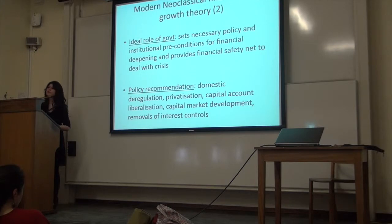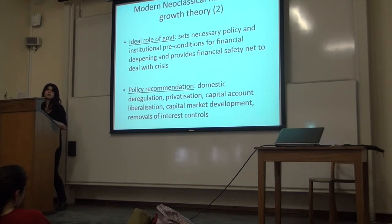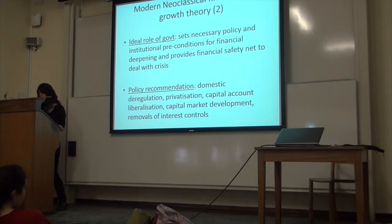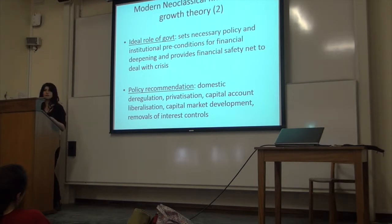The policy recommendations that come out of this literature are designed to minimize the allocative influence of the government — not necessarily the regulatory influence, but the allocative influence — and allow the market mechanism to work. This includes domestic financial deregulation, privatization of banks, capital account liberalization, removal of interest rate controls, and policies to develop capital markets — stock and bond markets. These policies together are generally termed 'financial liberalization.'